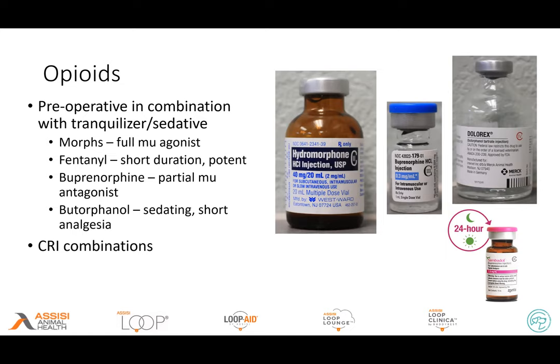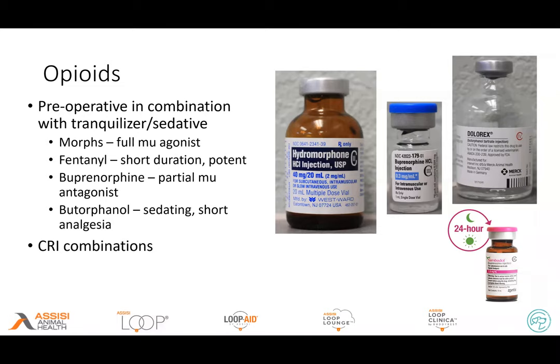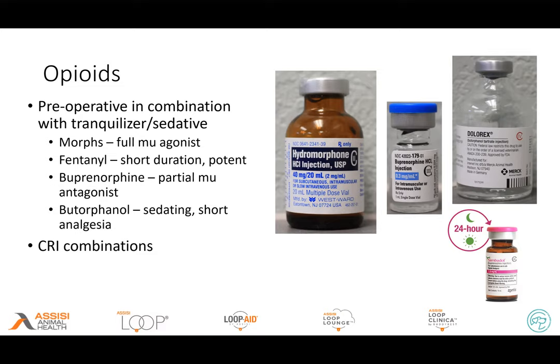Opioids are always going to be on our list — even when they're tough to find. If it's appropriate for the patient, I prefer using the full mu-agonist, combined with some mild sedative or tranquilizer. Buprenorphine can be used. I'm not real fond of butorphanol unless I need the sedation, because it doesn't last very long for analgesia and it can help reverse some of the others. Fentanyl can be used pre-operatively if the patch is placed on long enough in advance, but I do have some concerns because I've seen quite a bit of lethargy and inappetence with it.